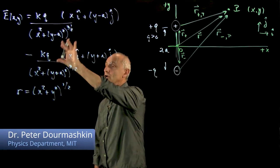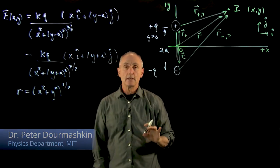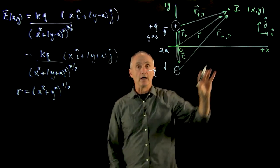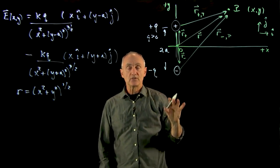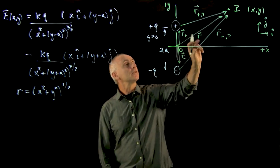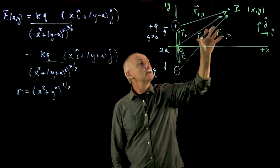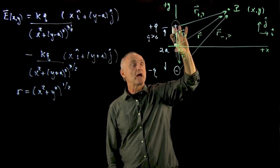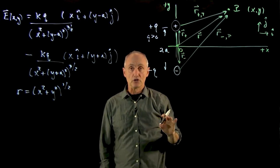We calculated the electric field in Cartesian coordinates for any point x and y. Now what I'd like to do is set up a calculation in which we look at the limit that the distance of the point p is much greater than the characteristic distance between these two charges.